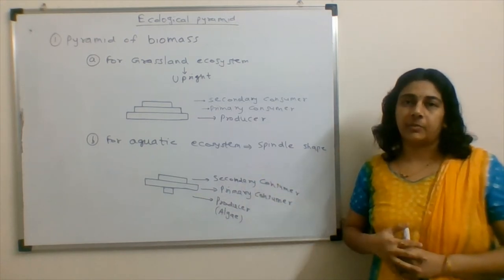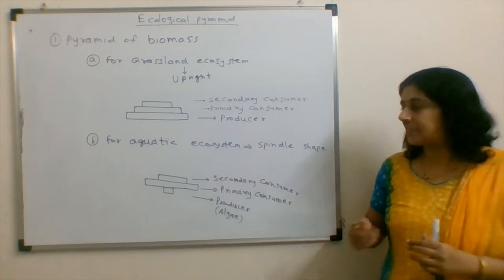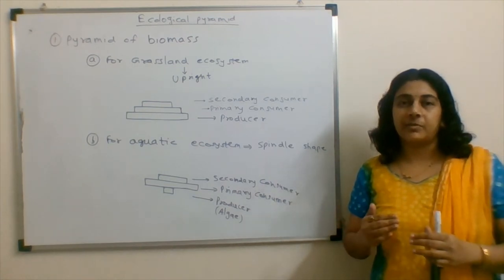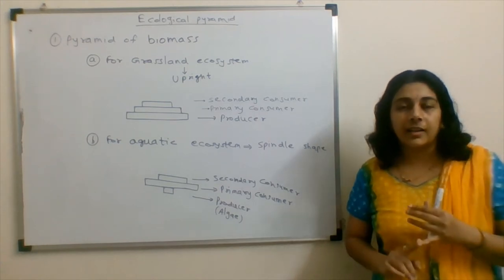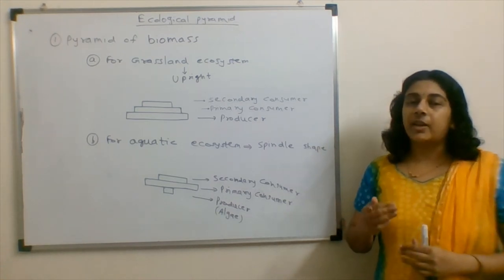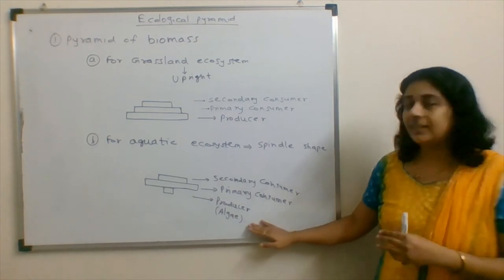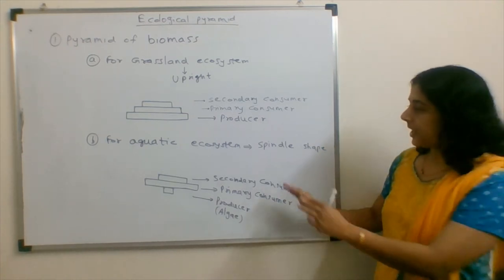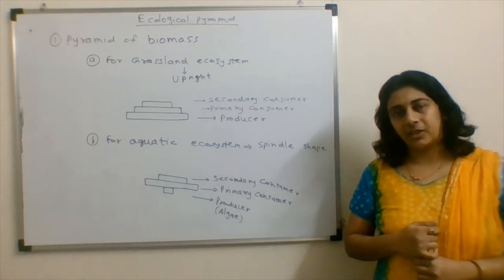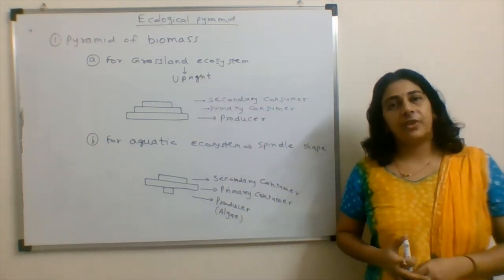Secondly, for aquatic ecosystem, what happens? Producers are algae. So the biomass of algae would be lesser as compared to the biomass of the primary consumer. Then secondary consumer. What would be the sequence? Algae would get eaten by small fishes and small fishes would get eaten by the large fishes. So the biomass of large fishes would be less as compared to the small fishes. And the biomass of algae is also less. So the pyramid becomes a spindle shaped pyramid for aquatic ecosystem. We find the upright pyramid for grassland ecosystem and spindle shaped pyramid for aquatic ecosystem.